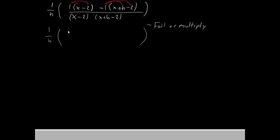1 times x is x. 1 times negative 2 is negative 2. Negative 1 times x is negative x. Negative 1 times h is negative h. Negative 1 times negative 2 is positive 2. The denominator will stay the same. It's still x minus 2, x plus h minus 2.